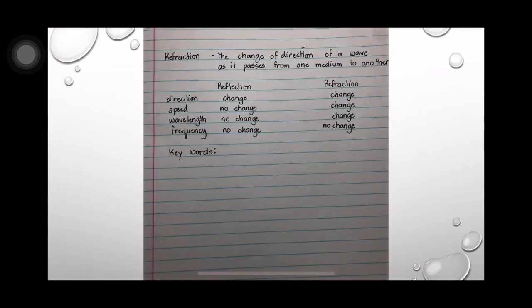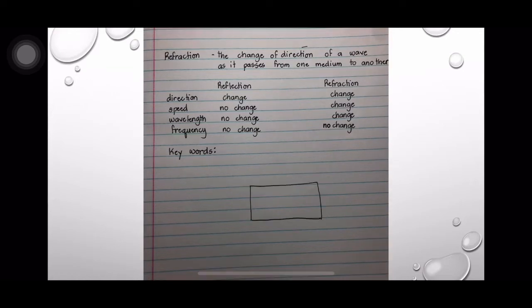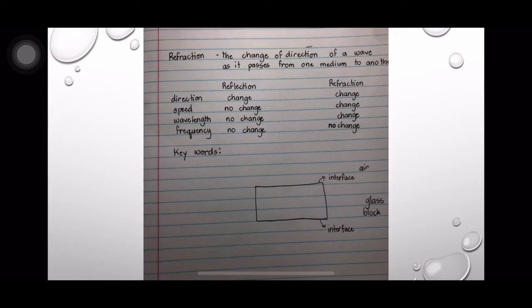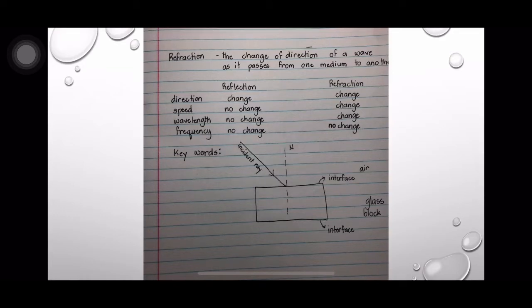Here are the key words we need to remember when we talk about refraction of light. Let's say two media of light — one medium is a glass block, and the other is air. The sides of the blocks are called interface. The interface is the boundary between the two media, air and glass, where the normal is drawn perpendicularly. This is the incident ray, which comes from the light source. It makes an angle with the normal, which is called incident angle.